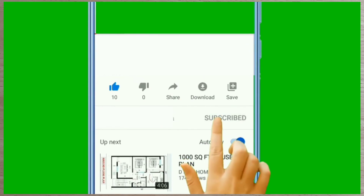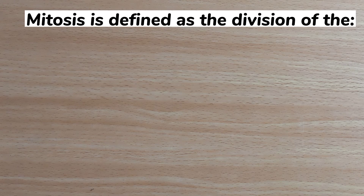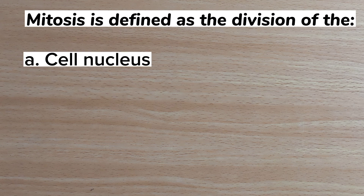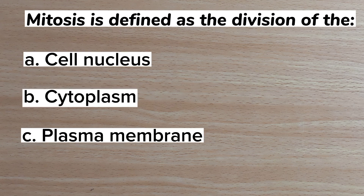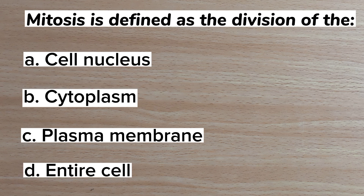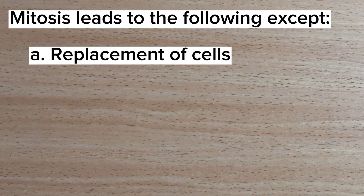Number 1. Mitosis is defined as a division of the: A cell nucleus, B cytoplasm, C plasma membrane, D entire cell. Answer: A cell nucleus.